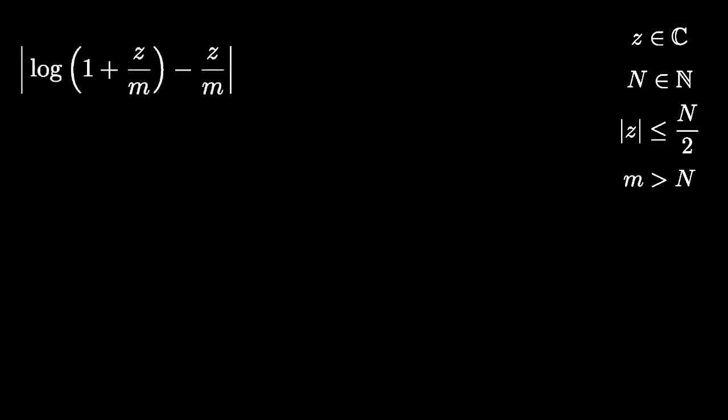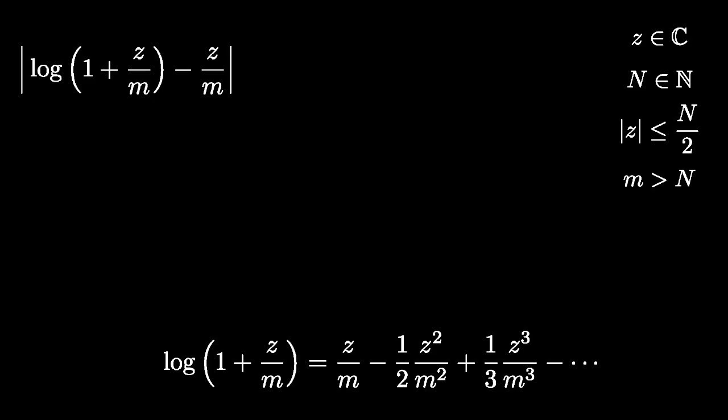Let's consider the absolute value of log of 1 plus Z over m minus Z over m. This is simply the absolute value of the Taylor series expansion of log minus the first term.